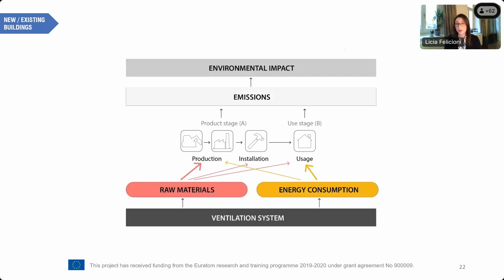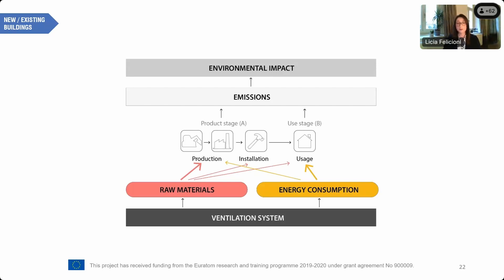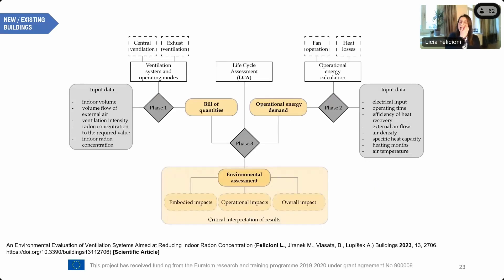Turning to ventilation systems, a new parameter enters our assessment: operational energy consumption. Unlike membranes, ventilation systems require energy to operate, which falls under life cycle stage B6 (use stage). Both product stage and use stage lead to emissions that contribute to environmental impact. The assessment of ventilation systems was divided into three phases: first, defining which ventilation systems and operating modes to study; second, calculating the bill of quantities of materials and operational energy from fans and heat loss cover; and third, performing the full LCA calculation, resulting in embodied impact, operational impact, and overall system impact.